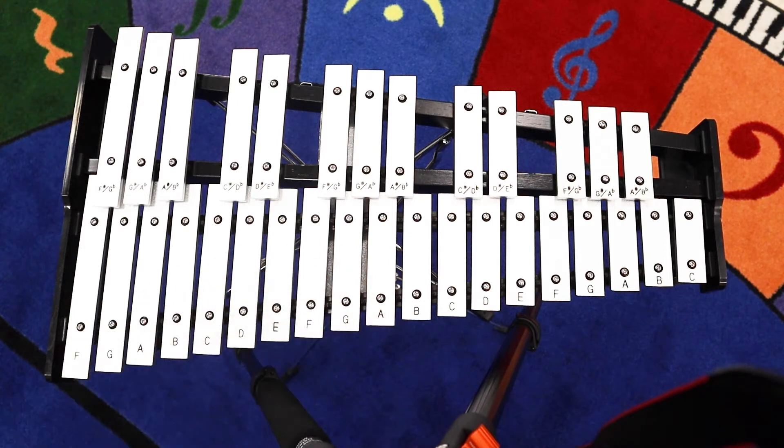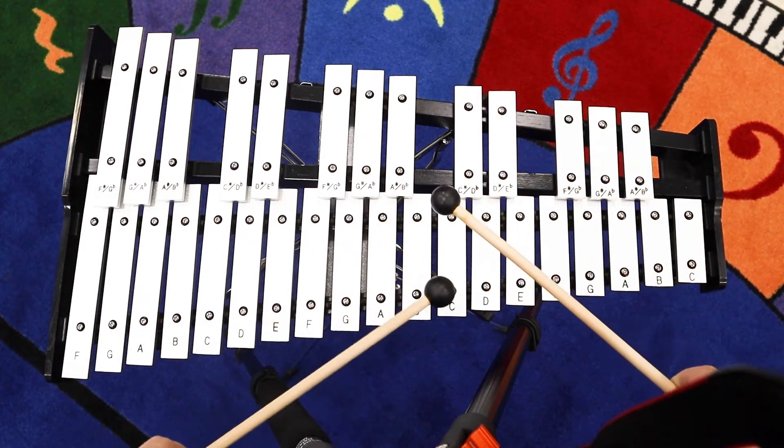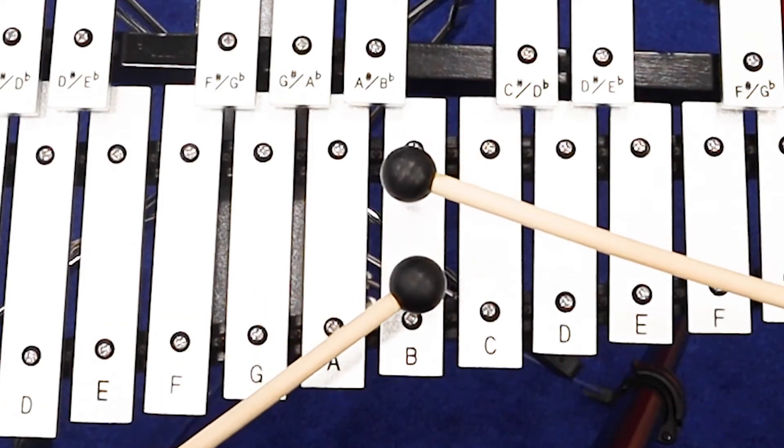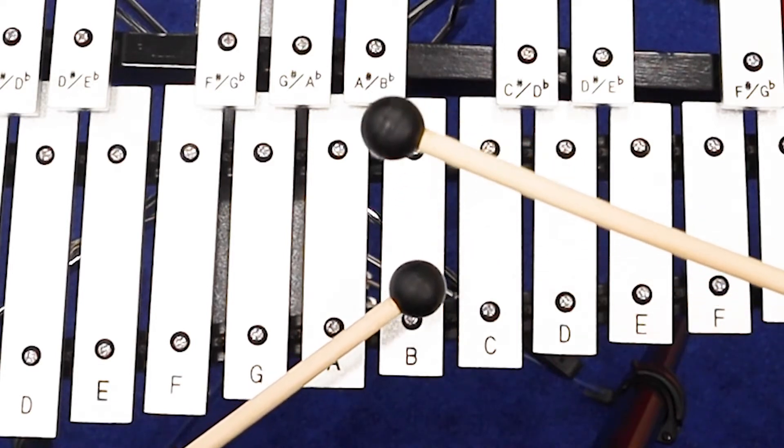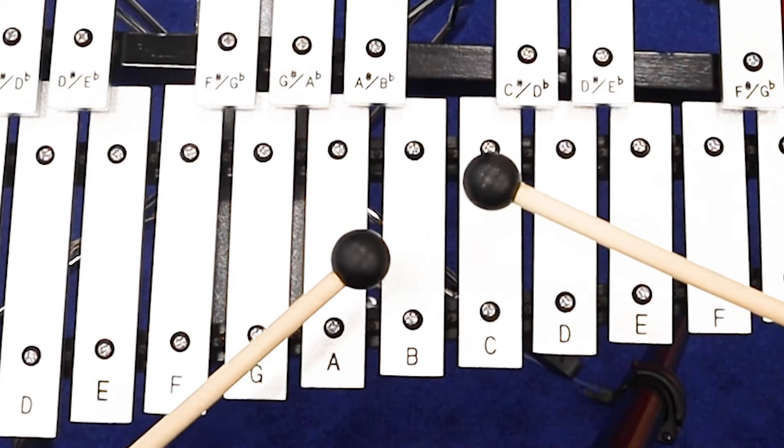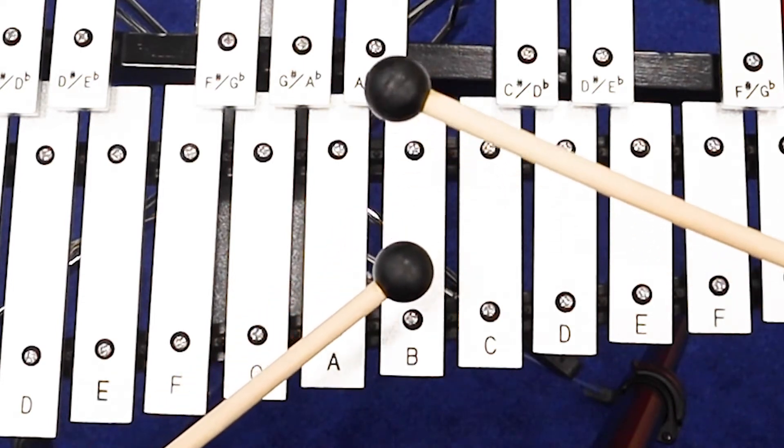Let's start with B. I'm going to play it four times, switching off between my right mallet and my left mallet. Copy me. One, two, I go first. One, two. One, two.